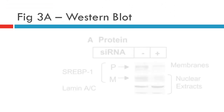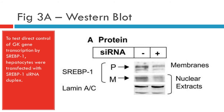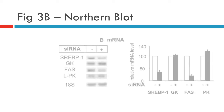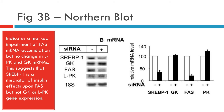Figure 3A is a western blot. Western blotting was performed to detect SREBP1 precursor (P) and mature (M) proteins. Lamin AC was used as control for the nuclear extract. Figure 3B is a northern blot. Total RNA was subjected to blot hybridisation with indicated 32P-labelled cDNA probes. Northern blots were scanned and quantified. Each value represents the amount of mRNA relative to that in the untransfected cells, arbitrarily set to 100. Values represent means of data from three independent experiments.